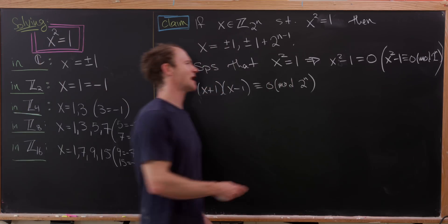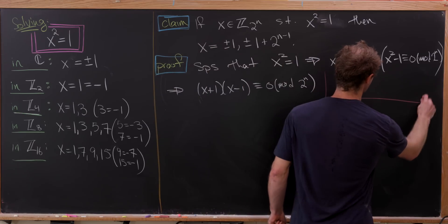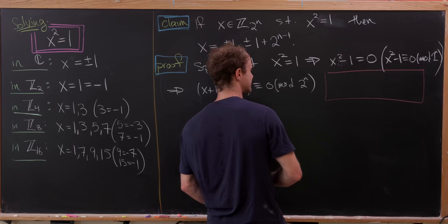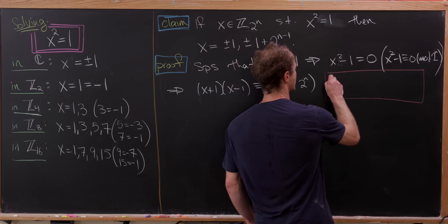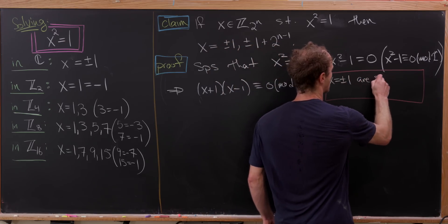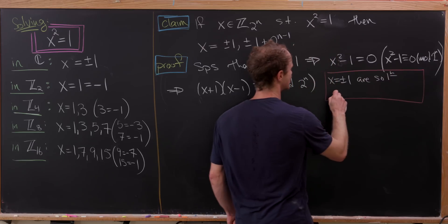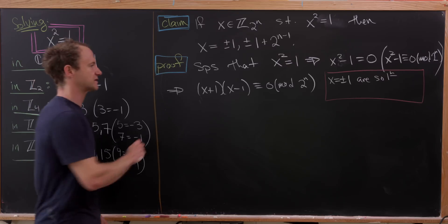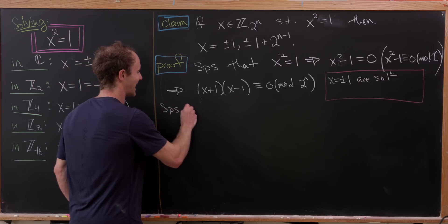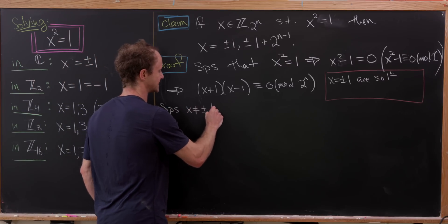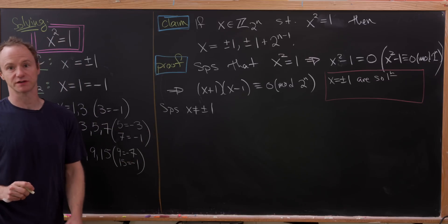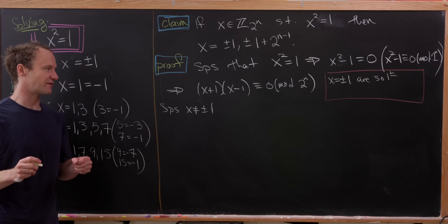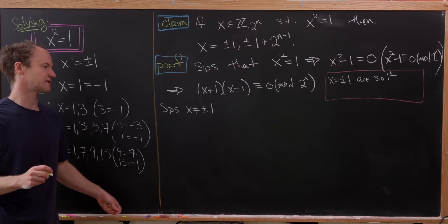But from this step, let's go ahead and immediately pull out two solutions. And let's note that x = ±1 are solutions. So further down our argument, we'll suppose that x is not equal to ±1 because we know that those are all solutions. So we're trying to find other solutions.